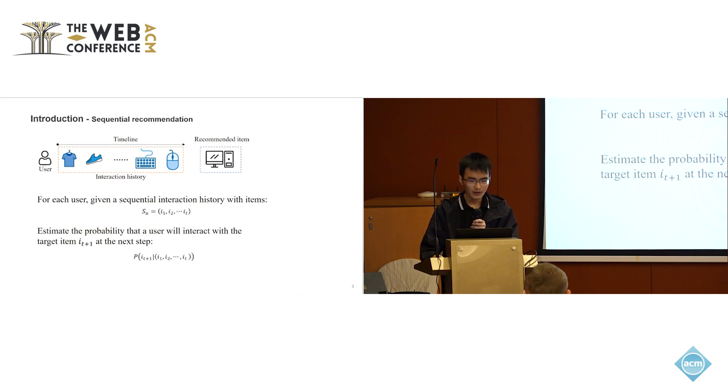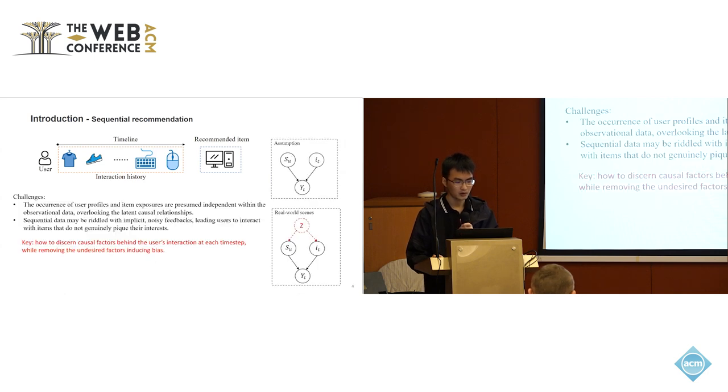The task of sequential recommendation generally involves predicting user's future preference based on user's historical interaction. For each user, we generally have a sequence of interactive items which are organized according to chronological order from I1 to IT. Our goal is to estimate the probability that a user will interact with the target item at the next time step. However, it generally faces some challenges.